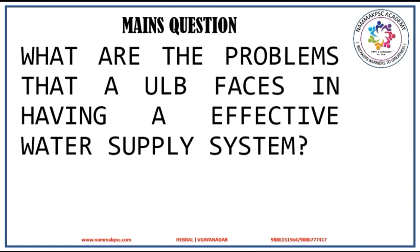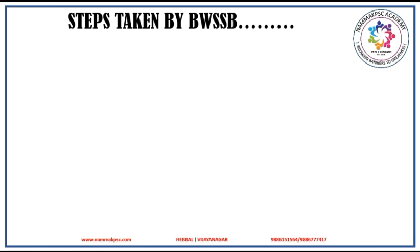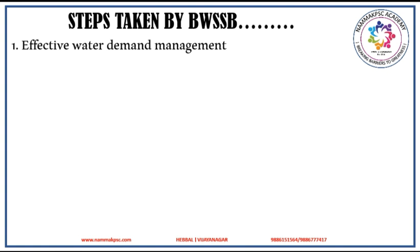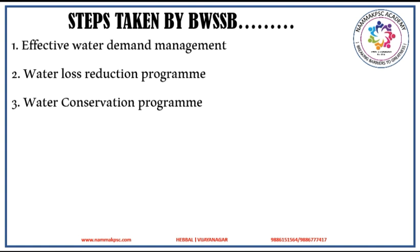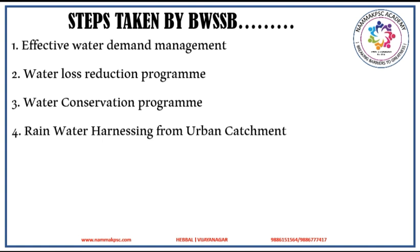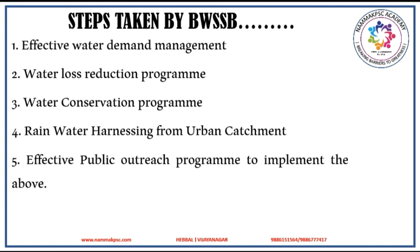The steps taken by BWSSB to tackle issues hampering effective water supply include: first, effective water demand management; second, water loss reduction program; third, water conservation programs; fourth, rainwater harnessing from urban catchment; and lastly, effective public outreach to implement all the above programs.